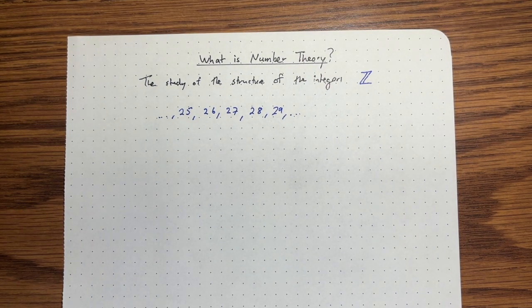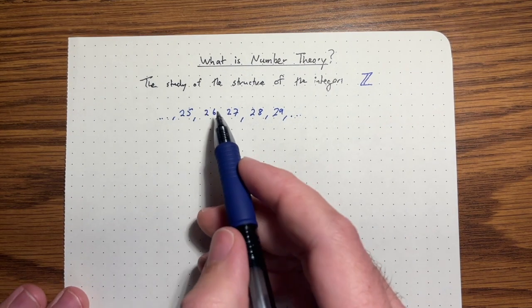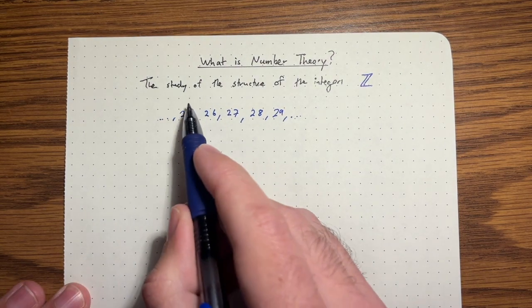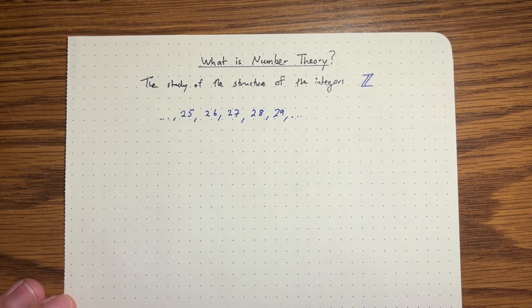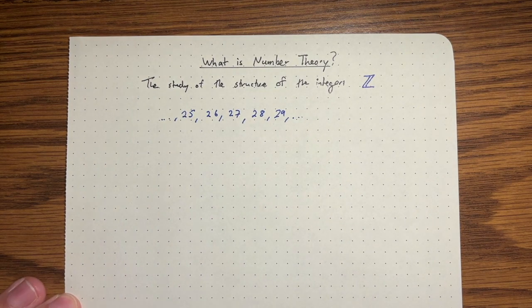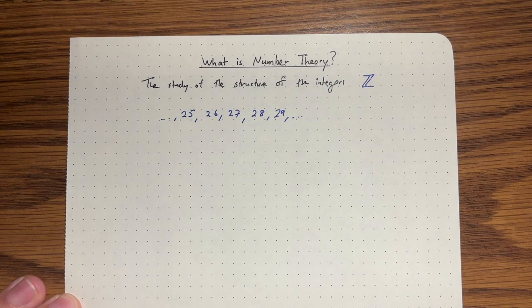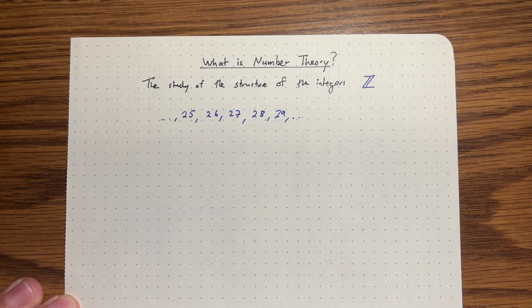What do we mean by the structure? Well, certainly 26 is one after 25, one before 27, and you're just going plus one every time. So if that were all there is to it, then nobody would study number theory. Sounds pretty uninteresting.